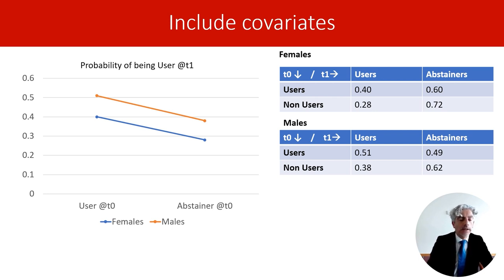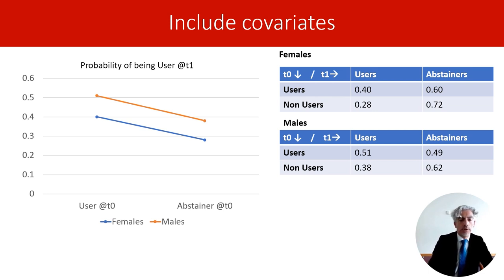However, the sign and strength of the association between latent statuses at the two time points is the same across gender. In a graph reporting the probabilities of being a user across gender conditional on previous latent class membership, the two lines represent males and females, and the two values on the X-axis represent previous latent class status — users at time zero and abstainers at time zero. While males have higher probabilities of being users, the lines are parallel, indicating that the strength of the association between latent variables was similar for males and females.